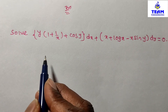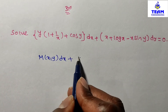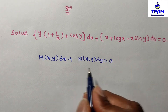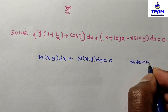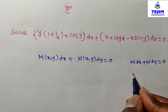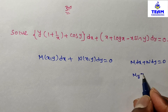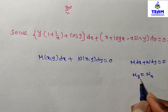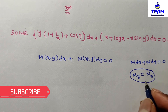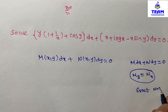By observation, the given problem is in the form M(x, y) dx + N(x, y) dy = 0. If the given differential equation is in this form, we have to verify whether it is exact or not. To verify: differentiate M partially with respect to y, and differentiate N partially with respect to x. Then check if ∂M/∂y = ∂N/∂x. If equal, it is exact; if not equal, it is non-exact.